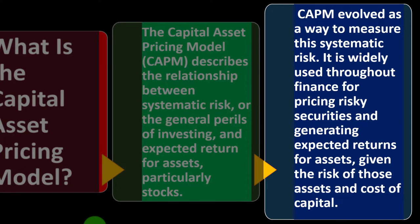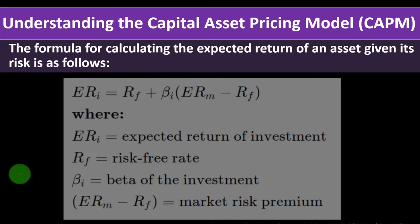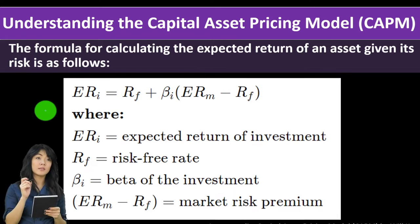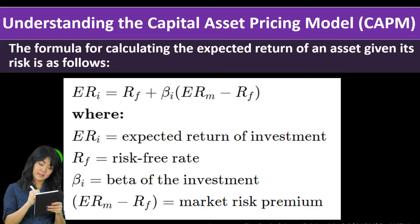The CAPM evolved as a way to measure systematic risk. It is widely used throughout finance for pricing risky securities and generating expected returns for assets given their risk and cost of capital. The formula for calculating expected return of an asset given its risk is: ER (expected return of investment) equals the risk-free rate...